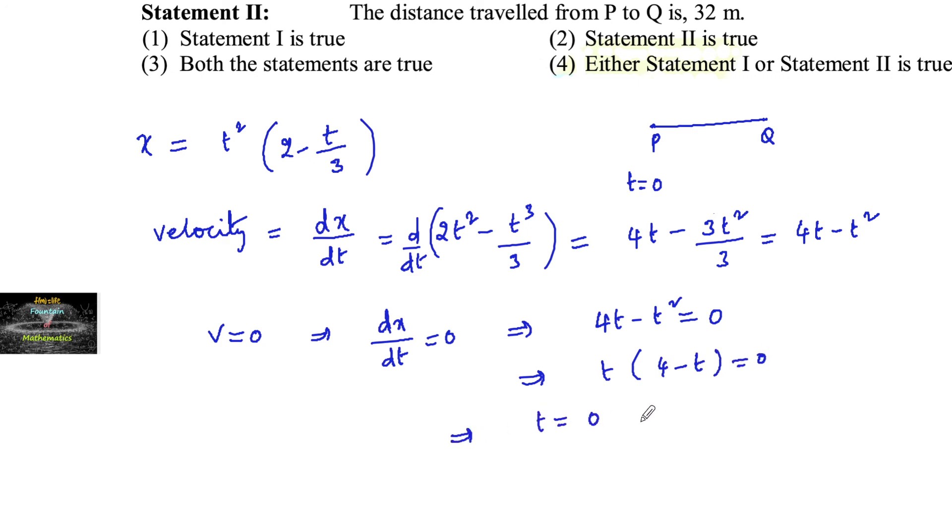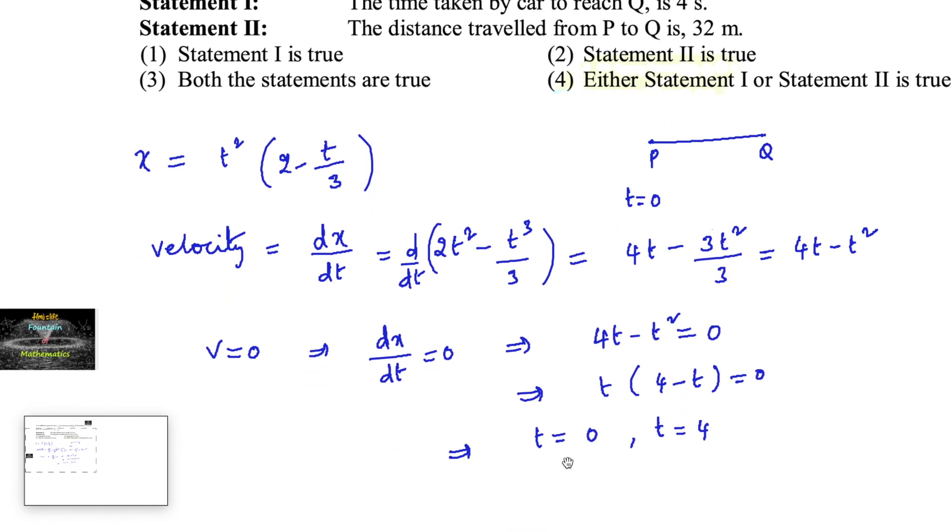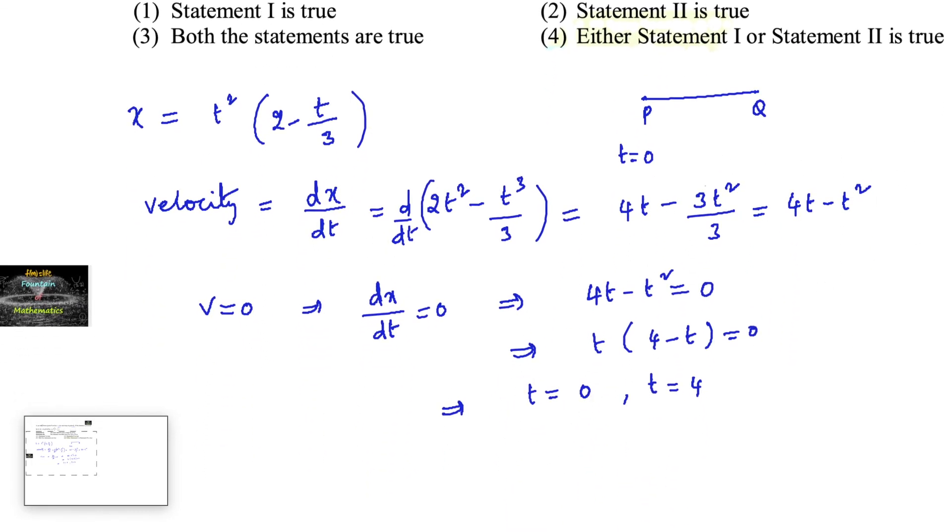At time t equals 0 seconds and t equals 4 seconds we can see that it stops. t equals 0 means it's not at all moving, it's a starting position, and t equals 4 we can consider it's an end position.